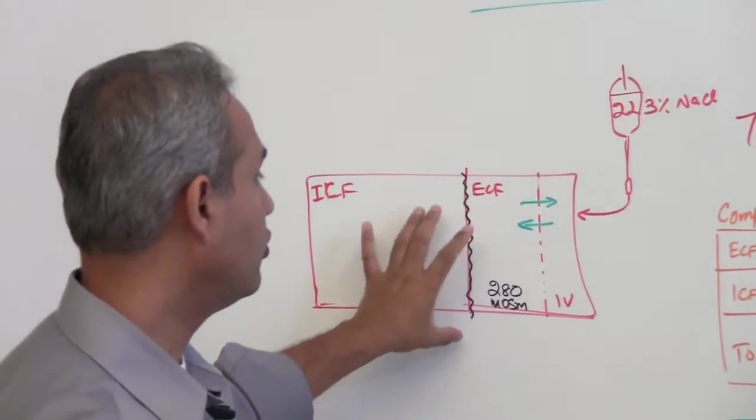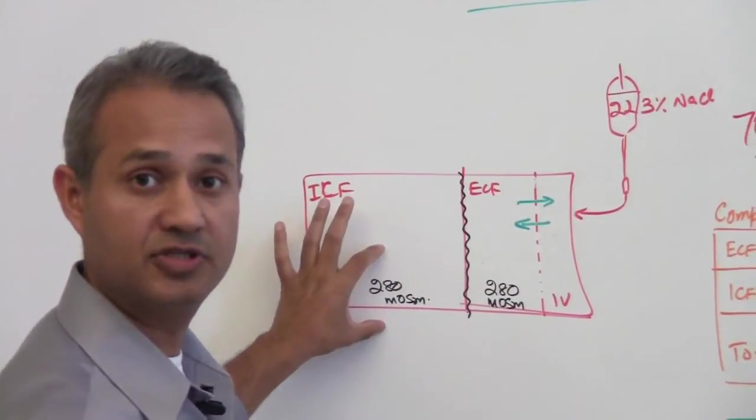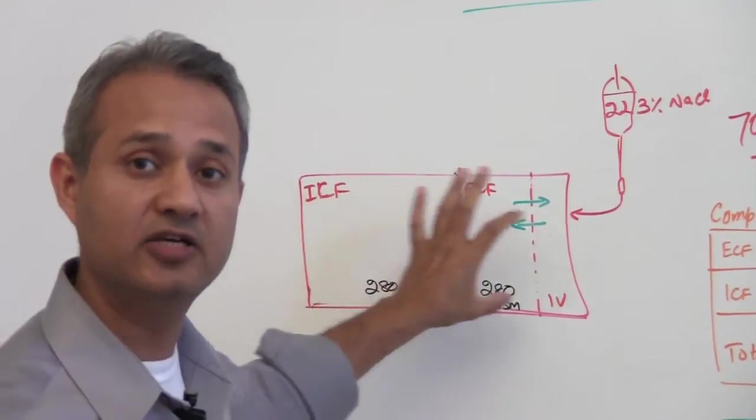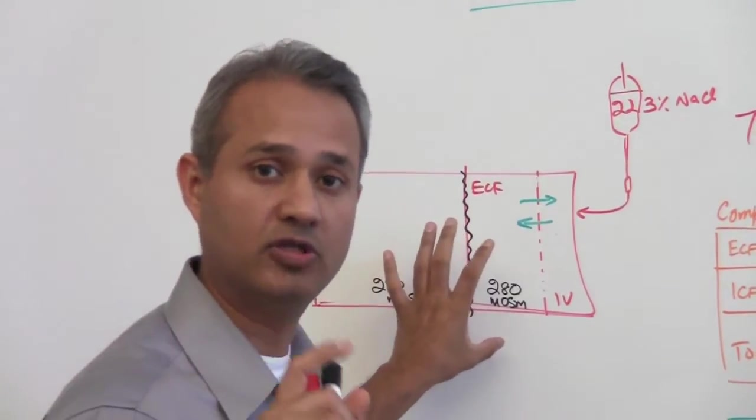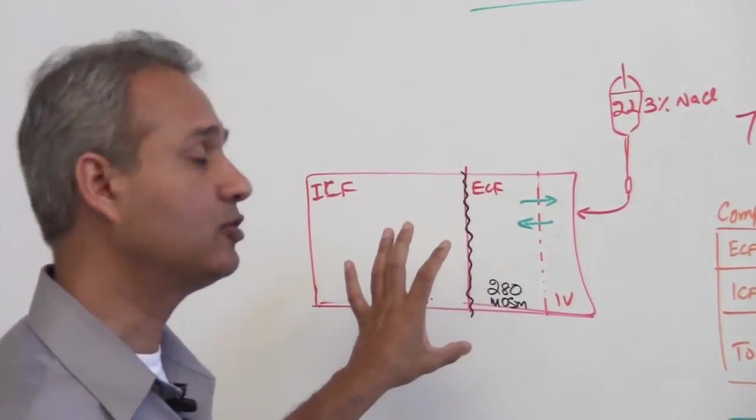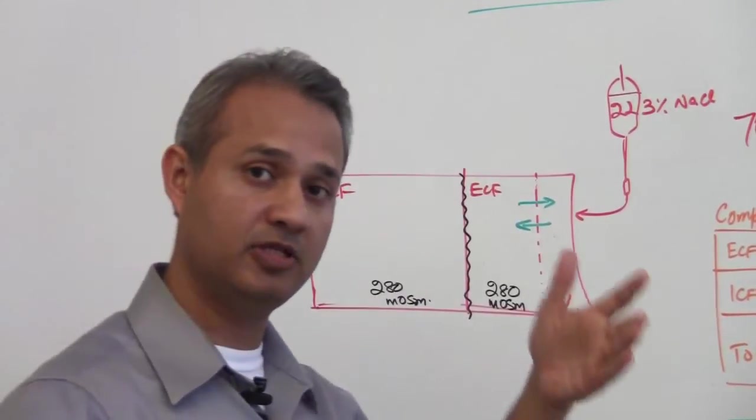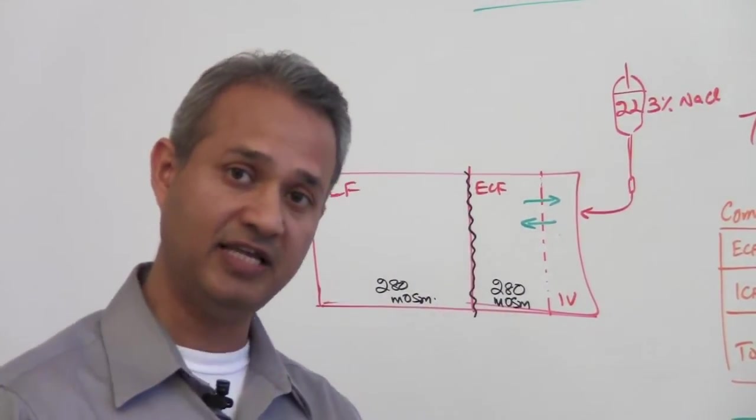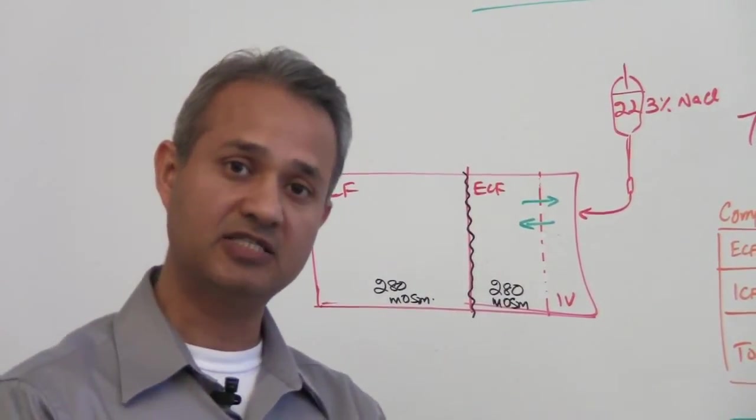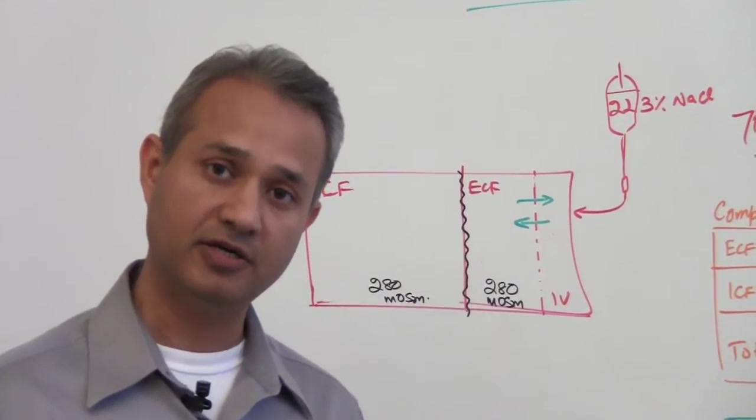So water will move to correct the solute concentration so osmolarity in the two compartments is equal. It will be kept equal and whenever there is a problem in the osmolarity, whenever there is a change in that, water would immediately start rushing and try to correct it.